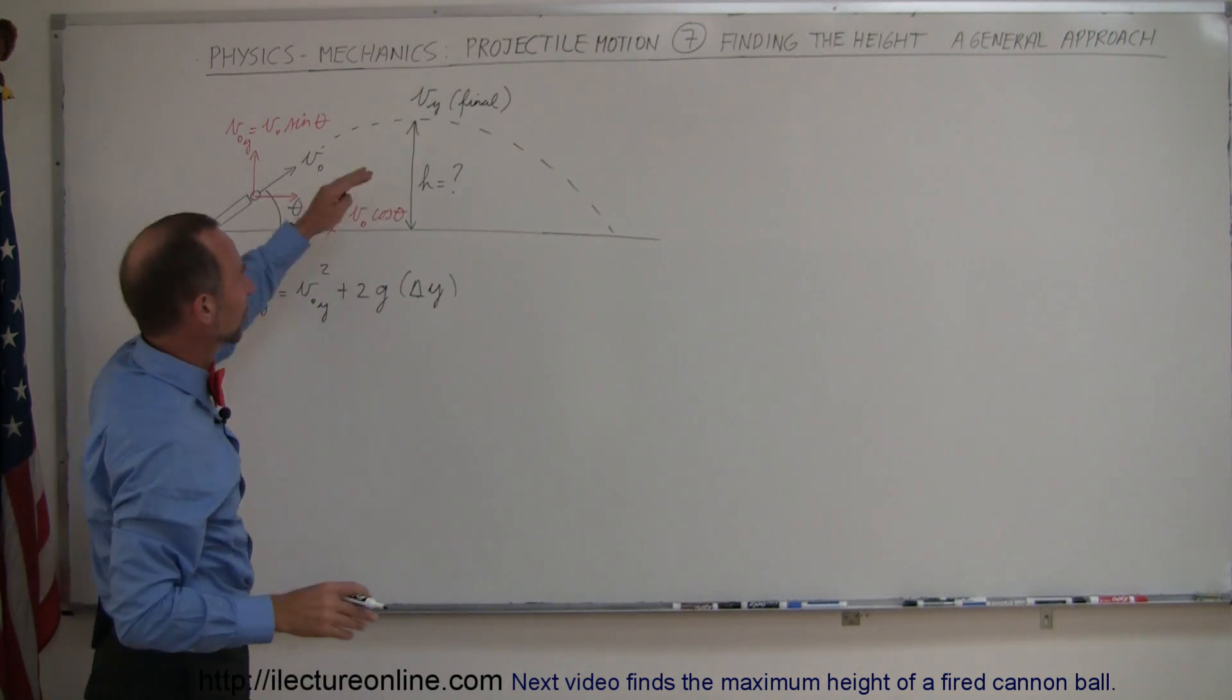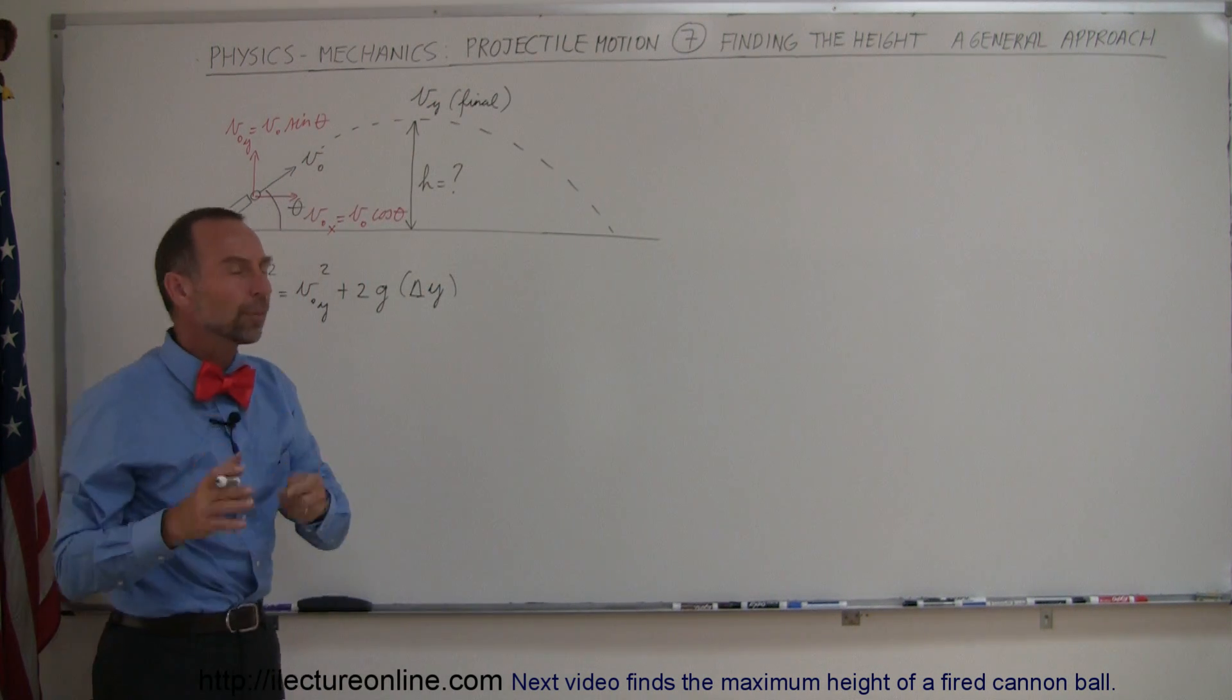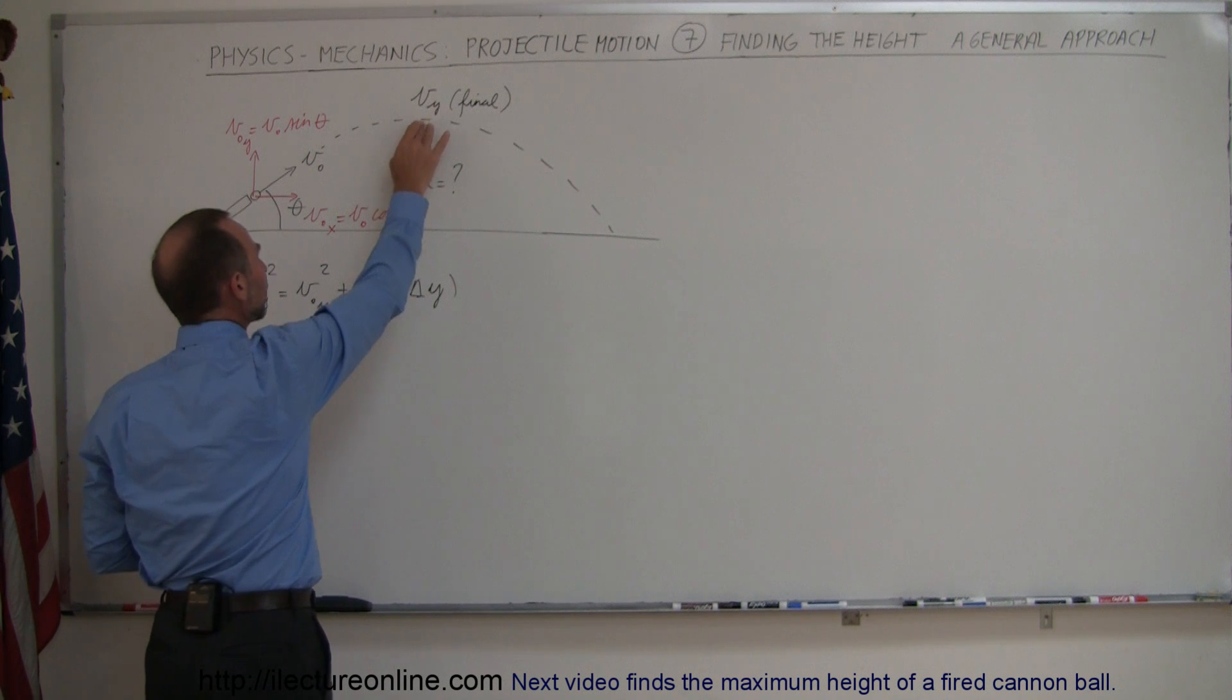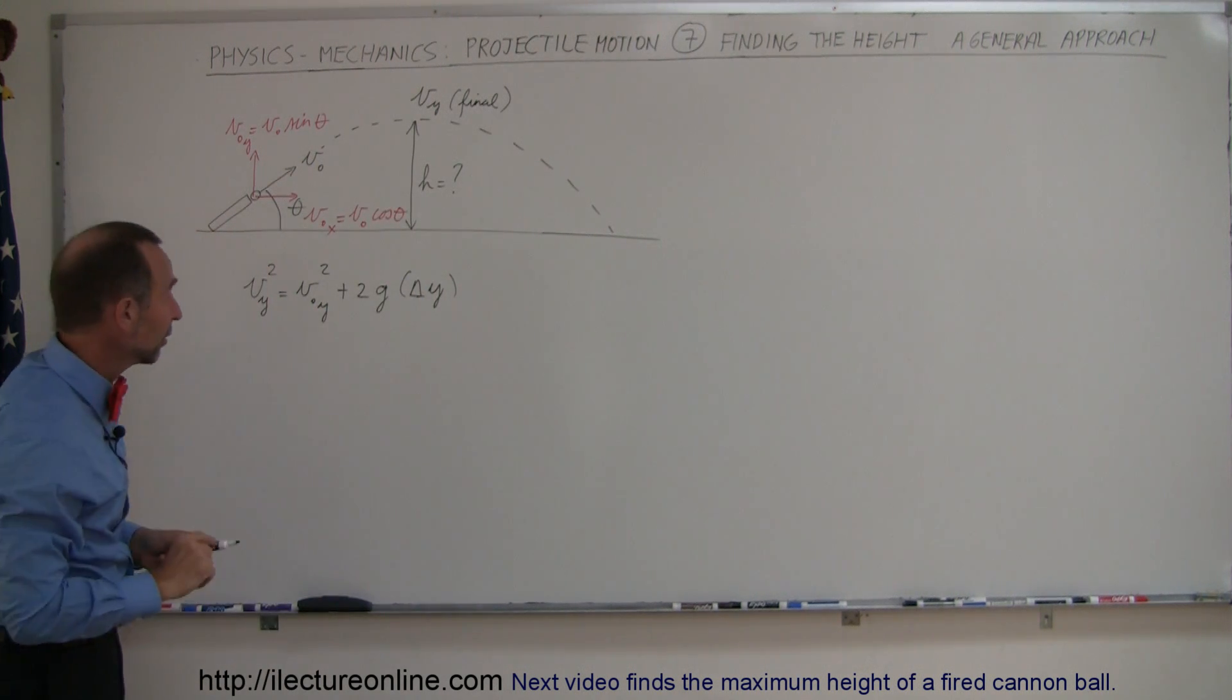Of course it's not the final, the projectile keeps going, but if we're doing the problem we'll assume this to be the final position right here, and at that point the velocity in the y direction will be zero.